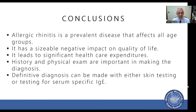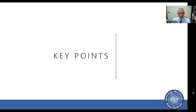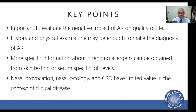In conclusion, allergic rhinitis is a prevalent disease affecting all age groups, with a sizable negative impact on quality of life and significant healthcare expenditure. History and physical exam are critical in making the diagnosis; a more definitive diagnosis can be made with skin testing or serum-specific IgE testing. Key points: evaluate the negative impact on quality of life; history and physical alone may be enough to initiate therapy; skin testing or serum-specific tests provide more detail. Less common modalities such as nasal provocation, nasal cytology, and CRD have limited value in clinical practice.